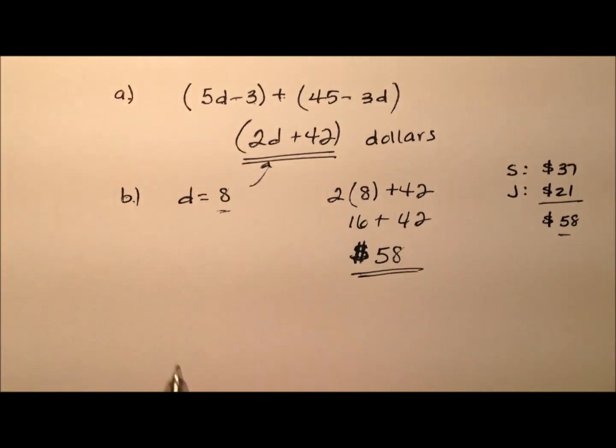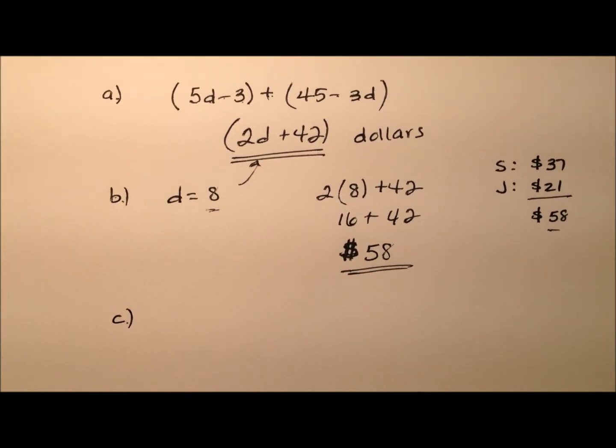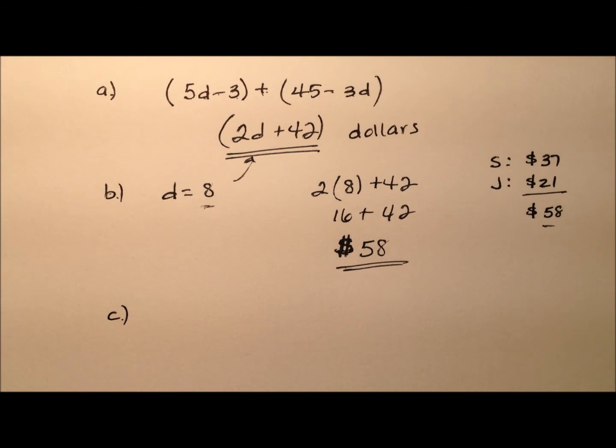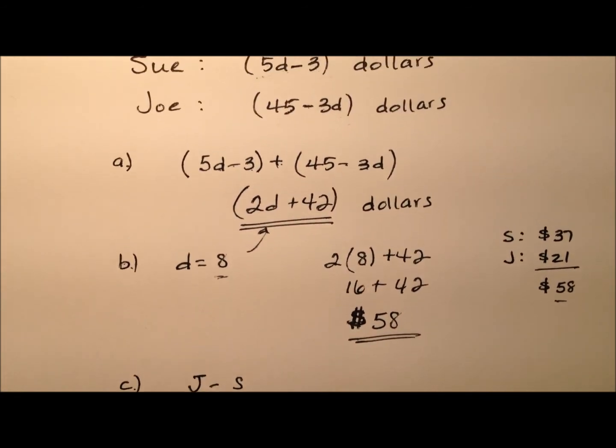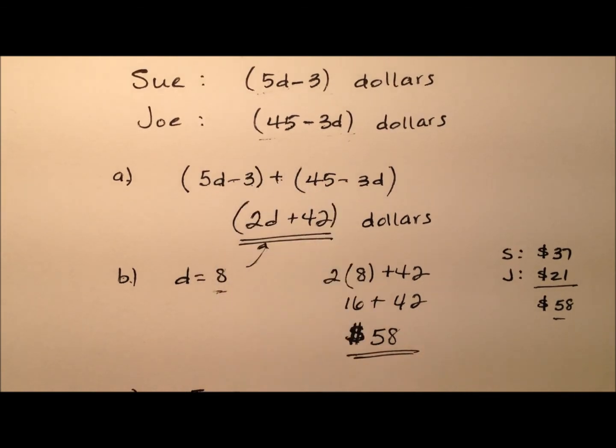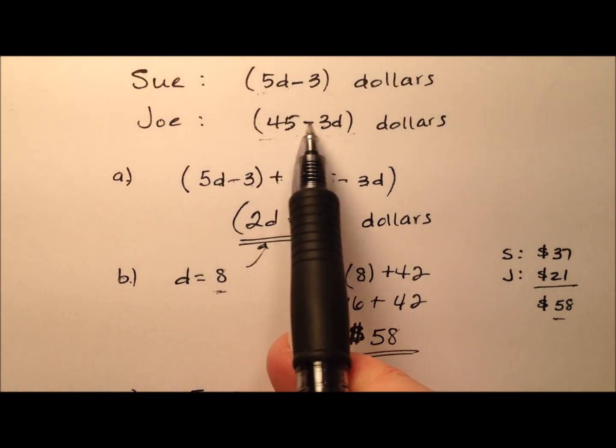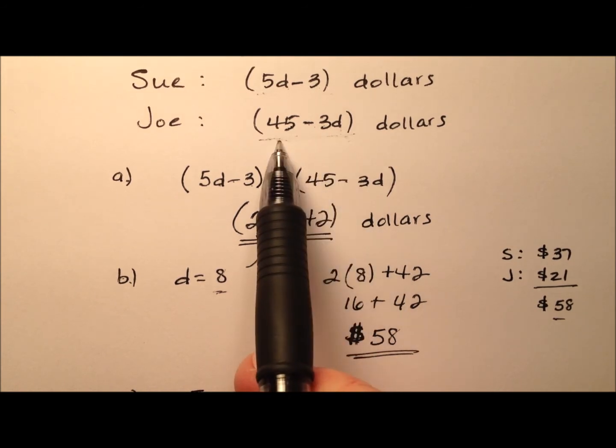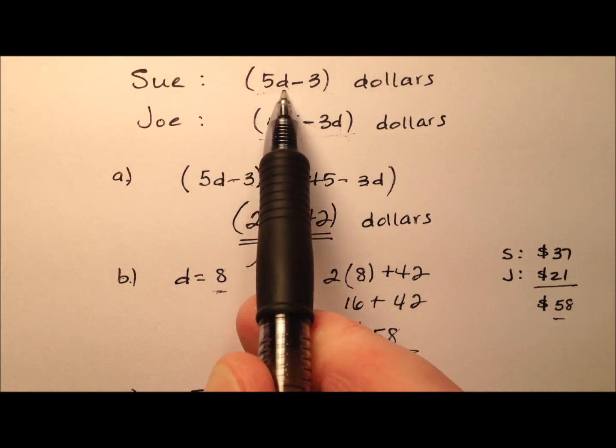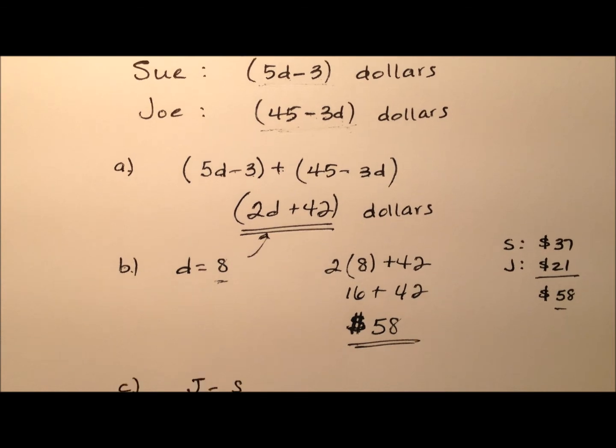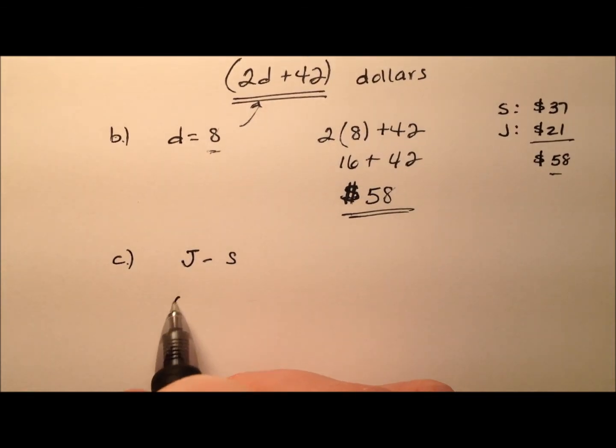Part C is asking how much more money does Joe have than Sue? Since Joe has more, we're going to say Joe minus Sue to find that difference. We're going to use these expressions: 45 minus 3d and subtract the expression 5d minus 3.